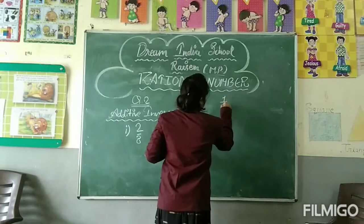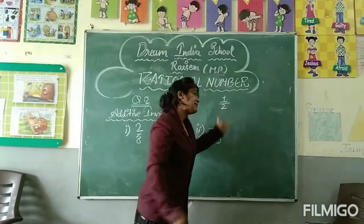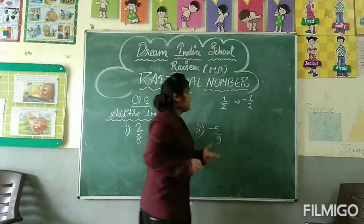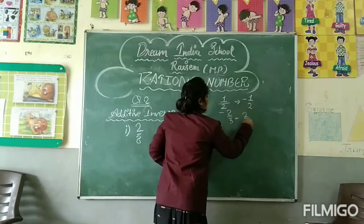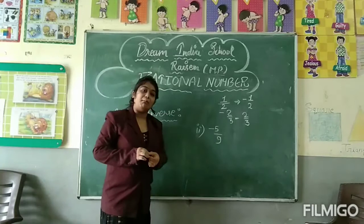Now additive inverse. We have 1 upon 2. The additive inverse of this term is minus 1 upon 2. It means the term with addition changes to subtraction, and subtraction changes to addition. Which term has the sign changed.